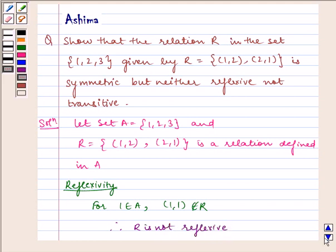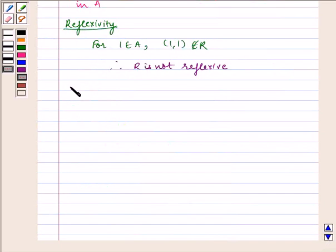Now let us check for symmetry. (1,2) ∈ R and (2,1) ∈ R. Therefore, R is symmetric.